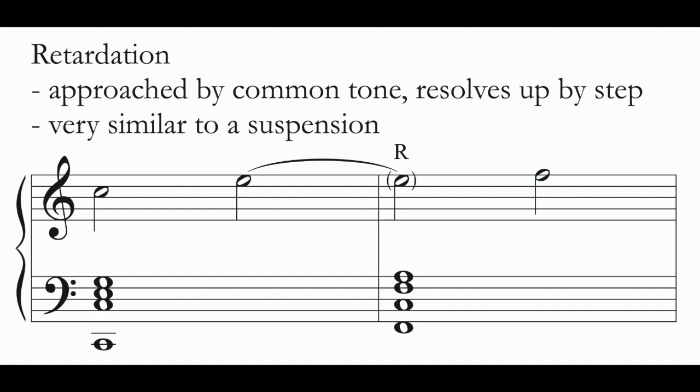The retardation is very similar to the suspension. It's approached by common tone, but instead of resolving down by step like a suspension, it resolves up by step. In my example, the retardation from C resolves up to that F major chord — E not being a part of the F major triad — so when it resolves up by step we know it was a retardation. I don't need to analyze the retardation with numbers the way I do with the suspension; we reserve that practice just for suspensions.